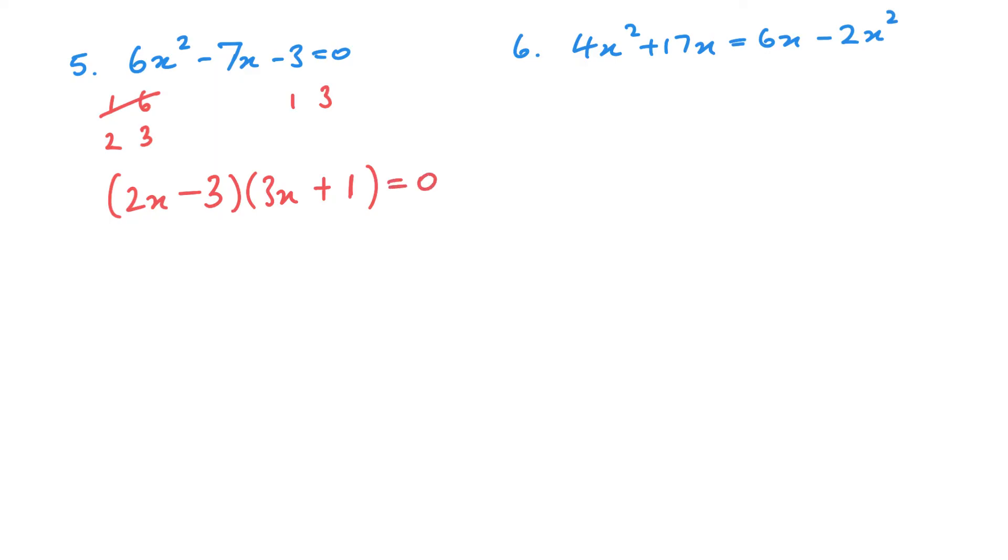2x minus 3 equals 0, or 3x plus 1 equals 0. So we've got 2x equals 3, x equals 3 over 2. 3x equals minus 1, x equals minus 1 over 3. There are my two answers.